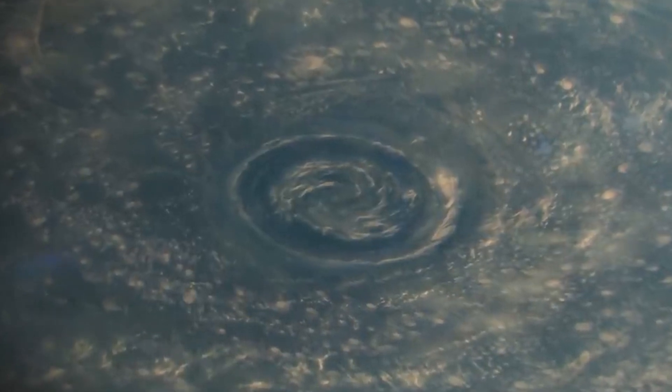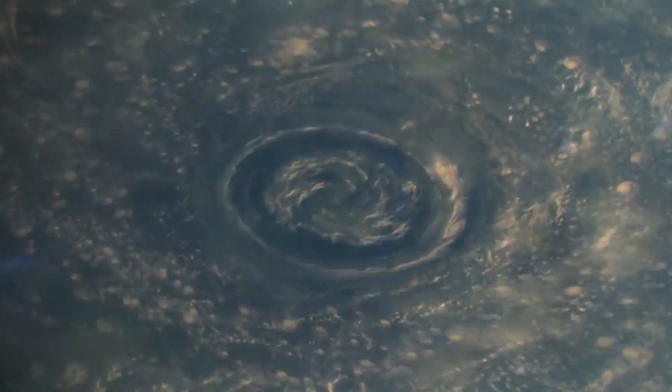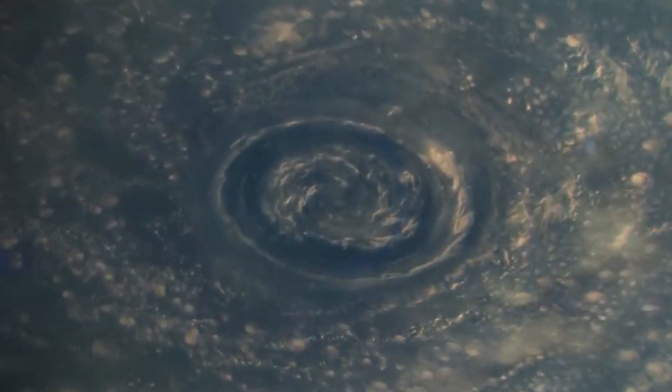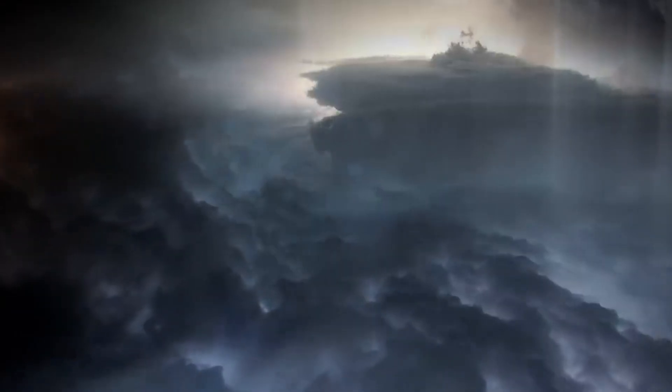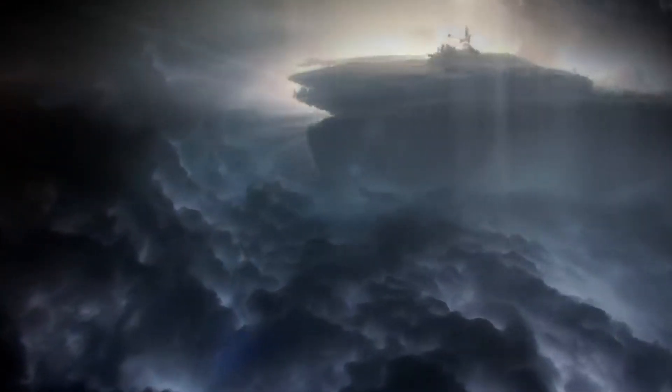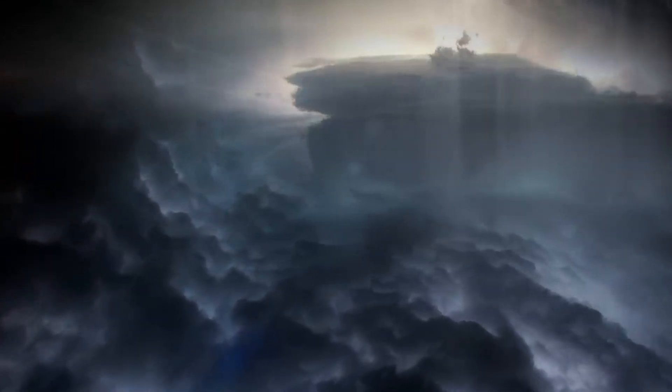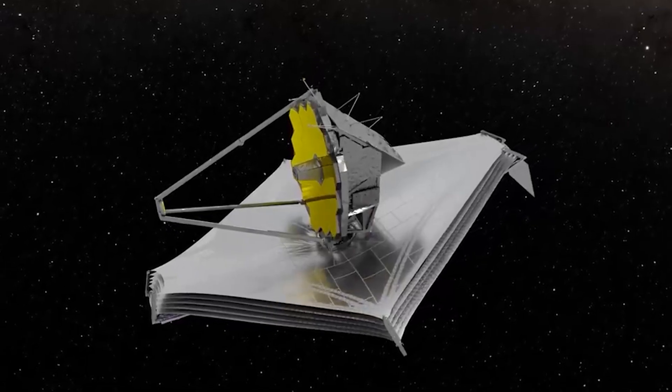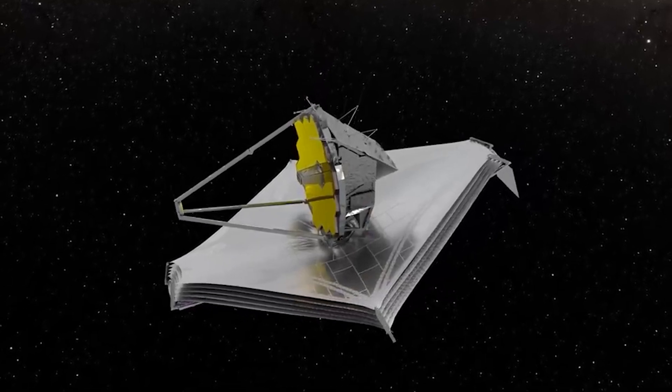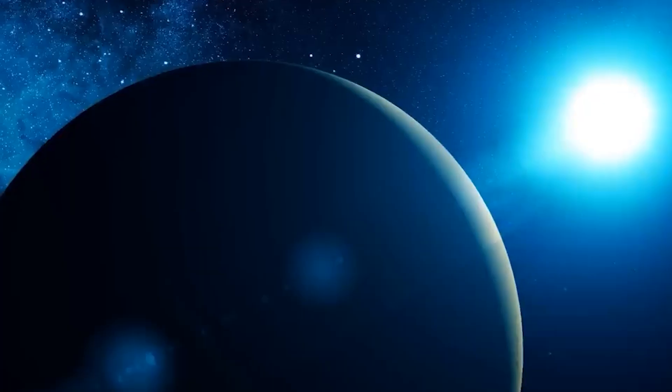Unlike Jupiter's Great Red Spot, which has lasted for centuries, Neptune's storms are short-lived. They tend to exist for only a few years, typically between two and six, before fading away or breaking apart.